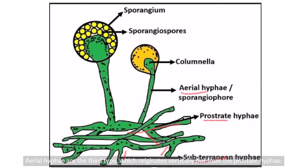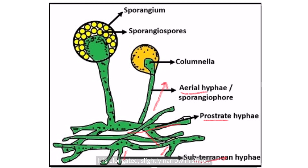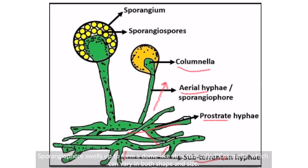Aerial hyphae are the third type, which originate vertically from the prostrate hyphae. At the top of this hyphae you can see the sporangiophore, which is elongated and slightly narrow in shape. Another structure called columella — the sporangiophore swells up to form a dome-like structure called columella, which can vary in both shape and size.